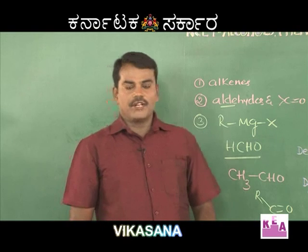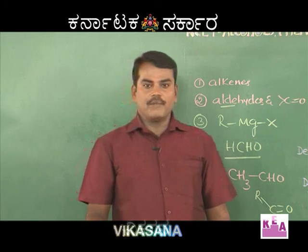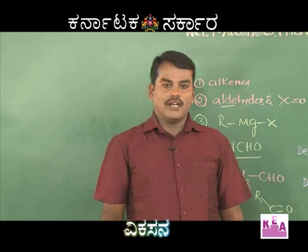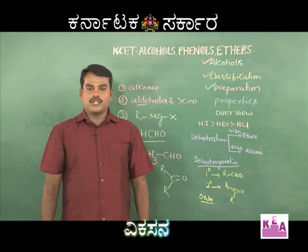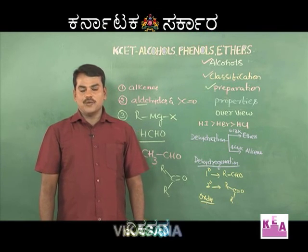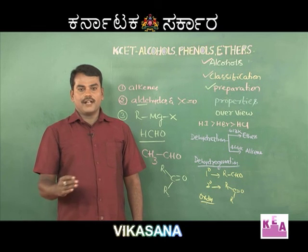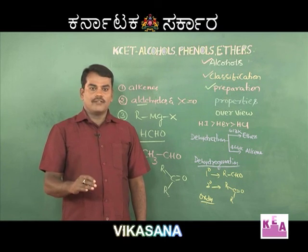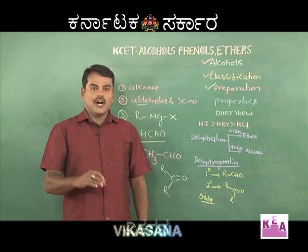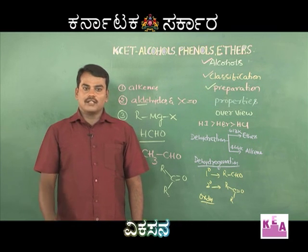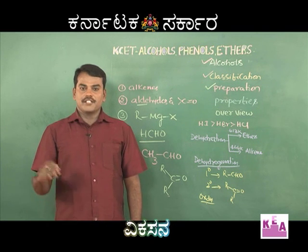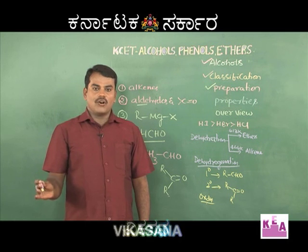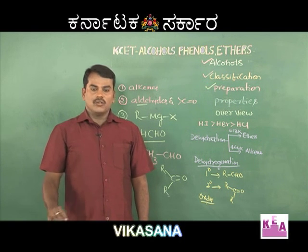Another way of differentiating primary and secondary from tertiary alcohol is by reaction with acidified potassium dichromate solution. Primary and secondary alcohols will change the color from orange to green. If it is tertiary alcohol, there is no color change.